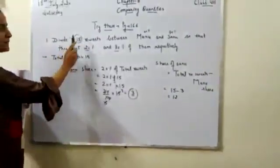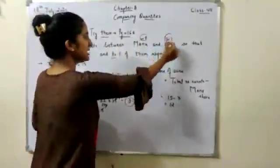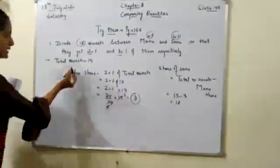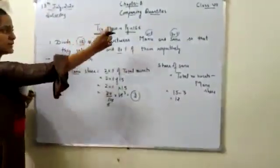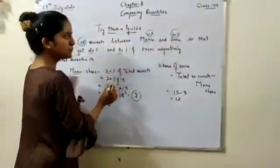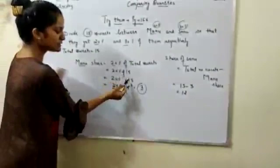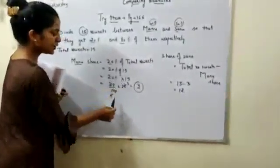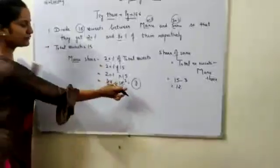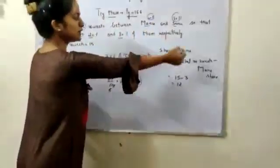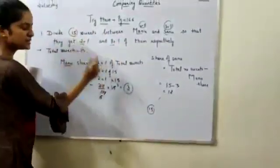To summarize: 15 sweets were divided between Manu and Sanu. Manu got 20% of total sweets, so 20% of 15 — that is 20 by 100 into 15 — equals 3. Sanu got 80% of total sweets, so 80% of 15 equals 12. Verification: 3 plus 12 is 15, which was the total number of sweets. So this is our answer.